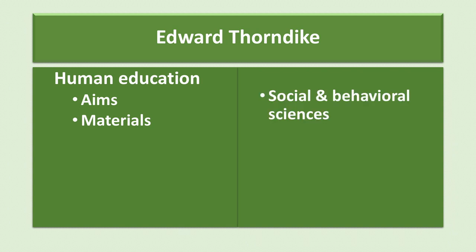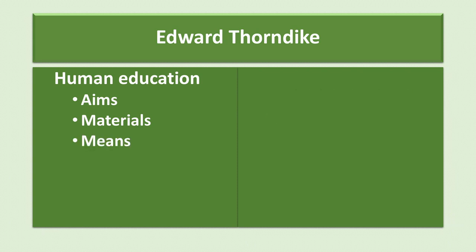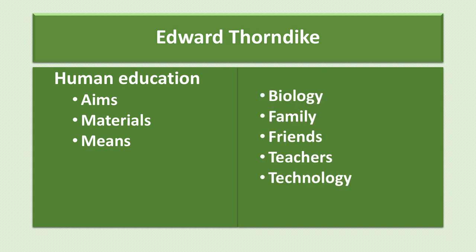He thought that the social and behavioral sciences provided the best methods for studying these. Third, he thought that educational psychology could investigate the means by which development occurred. More specifically, he thought that scientists needed to study human biology as well as the primary influencers such as family, friends, and teachers. He also wanted to investigate the technologies that were available such as pencils, books, blackboards, etc. He thought that these investigations would produce the information needed to guide development in a very mechanical process. If one knew all the materials and means, one could control the processes and achieve a desired outcome.